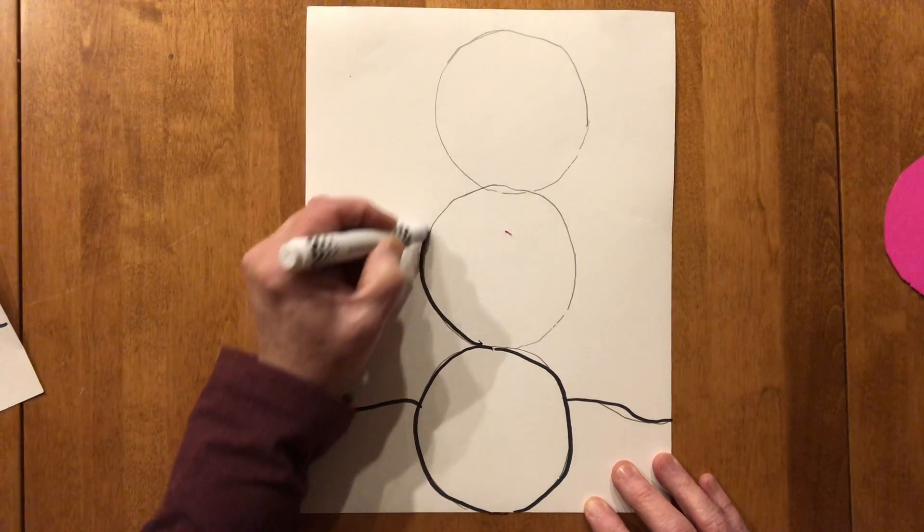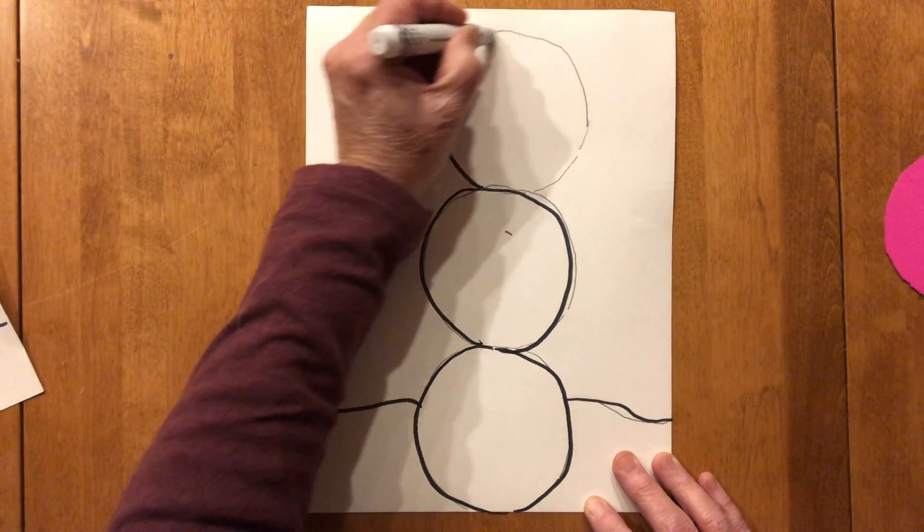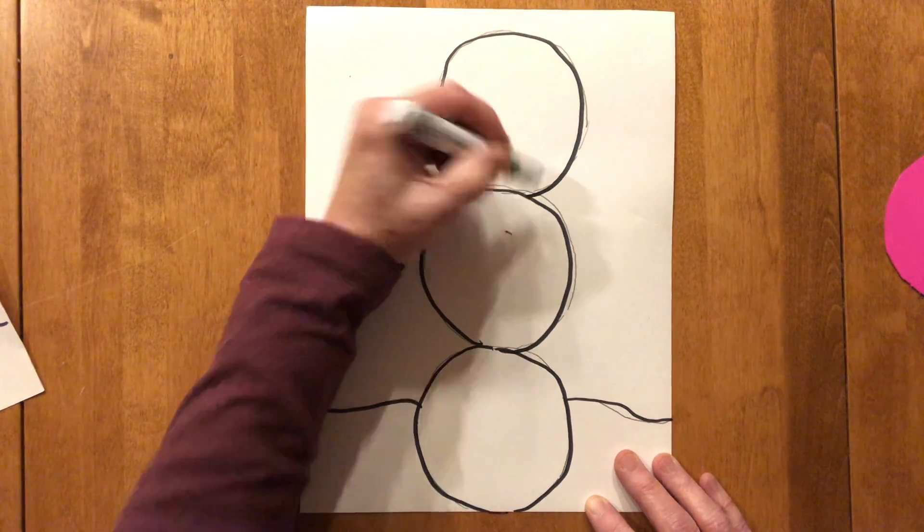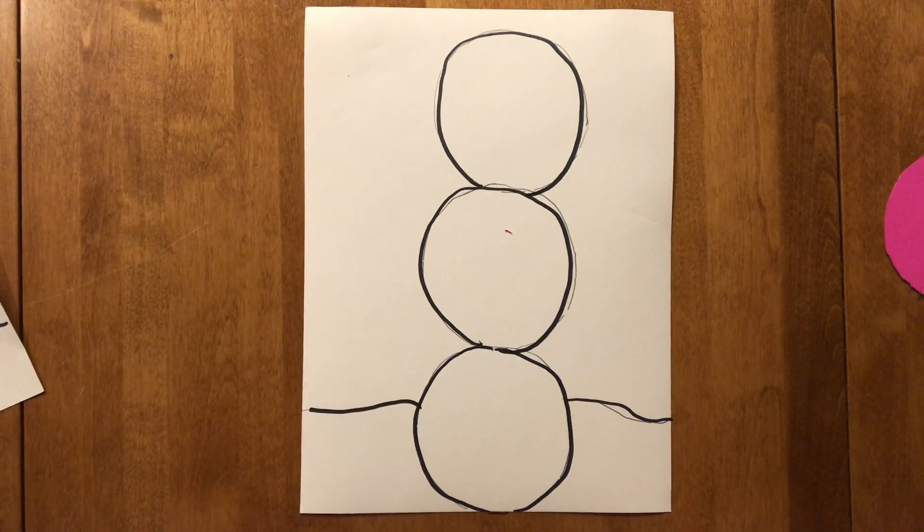All right, so then once we have our three circles traced with our pink tracing dot and then we have our snow bank down here we are going to start adding some things to our snow person.